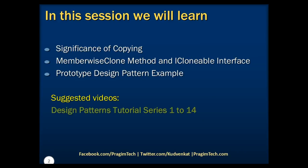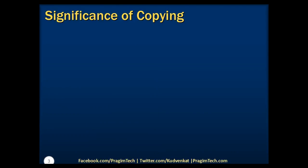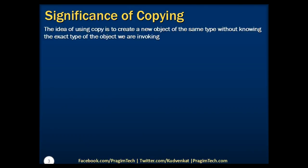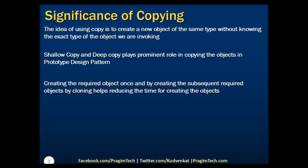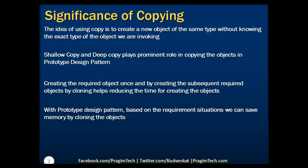Please refer to the previous parts of the tutorial before proceeding. Now let's see the significance of copying in the prototype design pattern. The idea of using copy is to create a new object of the same type without knowing the exact type of object that we are invoking. Shallow copy and deep copy play a prominent role in copying objects in the prototype design pattern. Creating the required object once and then creating subsequent objects by cloning helps reduce the time for creating objects. With the prototype design pattern, based on the requirement situations, we can save memory by cloning the objects.